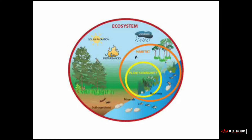In this slide you can see a picture of what an ecosystem looks like. There are many organisms — some non-living components like solar radiation, moisture, nutrients, plant community, soil organisms, and minerals — all together forming an ecosystem.